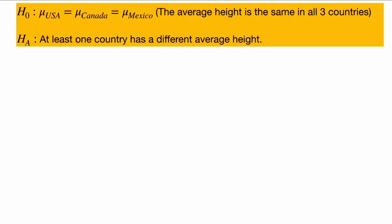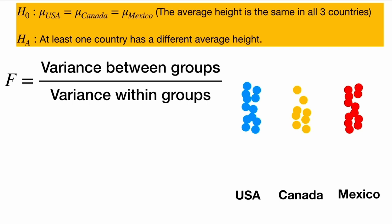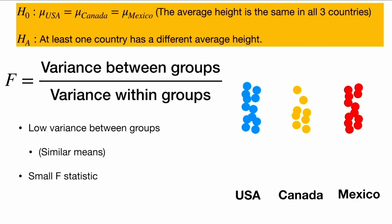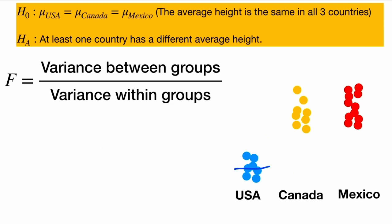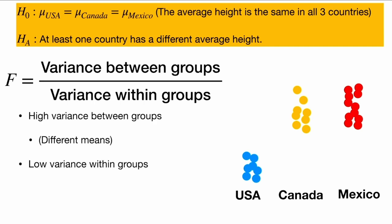Here's a visual recap of ANOVA. Our null hypothesis is that all the groups are equal, and we want to prove that at least one country has a different height, measured through the F-statistic — the variance between groups over the variance within groups. In the first example, we have low variance between groups, all groups have similar means, so the F-statistic will be small and we fail to reject the null. In the second example, all groups have the same mean, the variance between groups is again small, and we also fail to reject the null. In the third example, we have high variance between groups with different means, and also low variance within groups, making the F-statistic very large — so we reject the null and conclude the U.S. has a different height than the other countries.